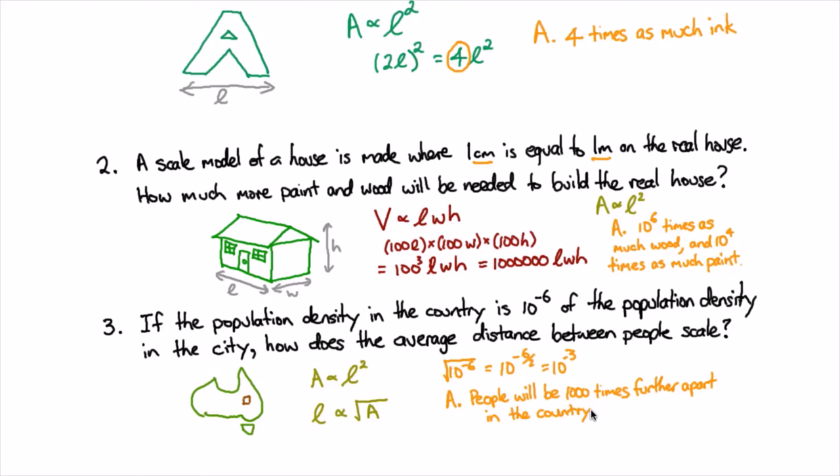So in the first case we saw that the amount of ink was basically proportional to the amount of area so if we double the point size we have to quadruple the ink. In the second case we saw that the paint was a matter of area but the wood was a matter of volume and so we knew we needed 10,000 times as much paint but a million times more wood.